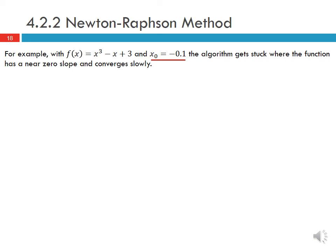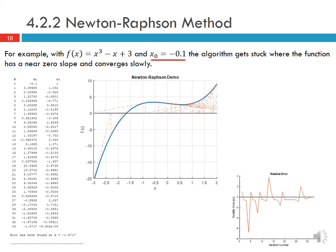Consider f of x equal to x cubed minus x plus 3. With an initial guess of minus 0.1, the algorithm gets stuck near the local minimum where the function has a near-zero slope, and converges very slowly. It does eventually get out of this area and converge on the root, but it takes 33 iterations, with the relative error oscillating before finally converging.